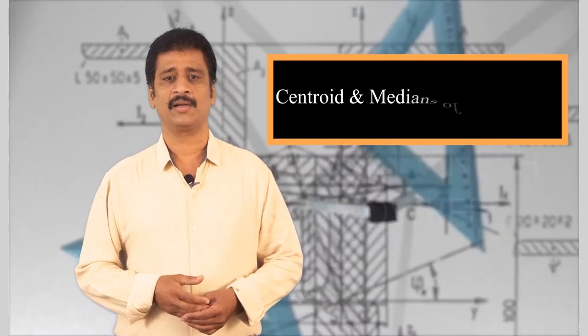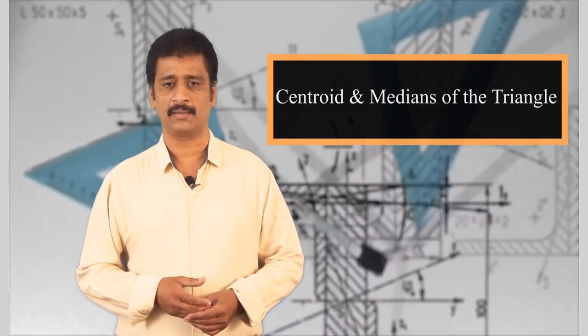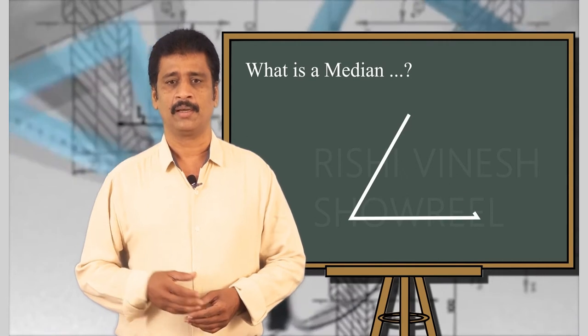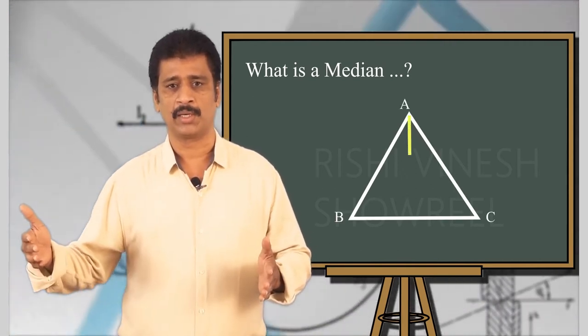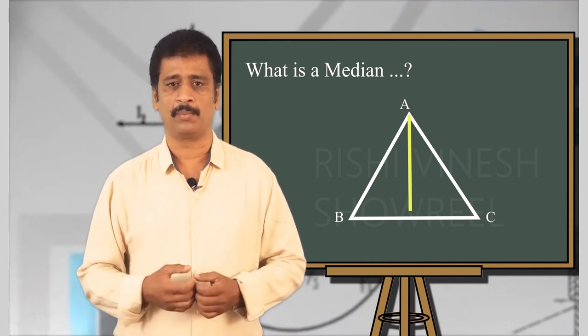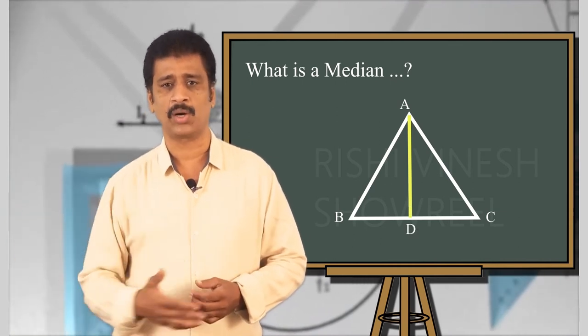The centroid and the medians of the triangle. What is a median? The line drawn from a vertex to the midpoint of the opposite side is called the median.